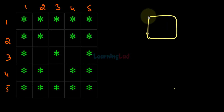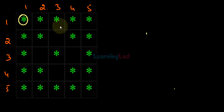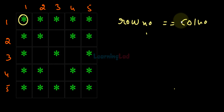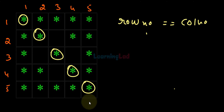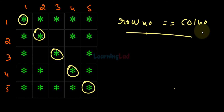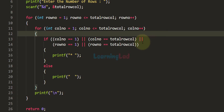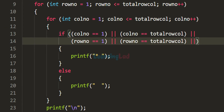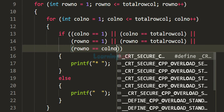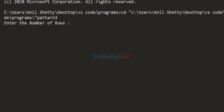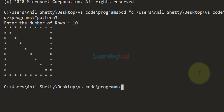Now we have the box and we need to add logic for the diagonals. For the main diagonal, whenever row_num == colnum we display a star — first row first column, second row second column, and so on. We add another OR condition: if row_num == colnum, display star. Running with 10 rows now gives us this pattern with the main diagonal.